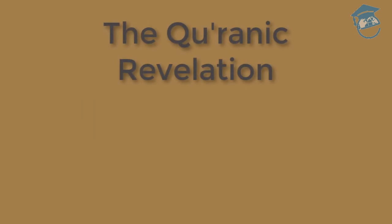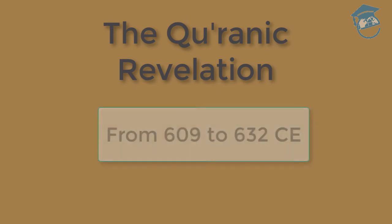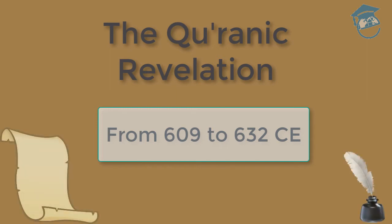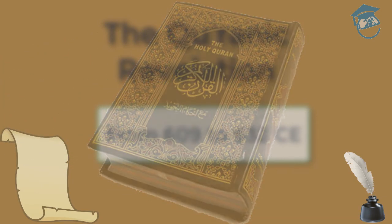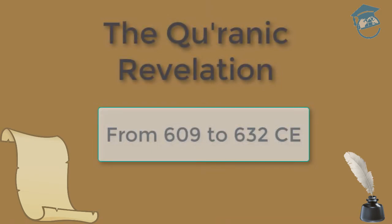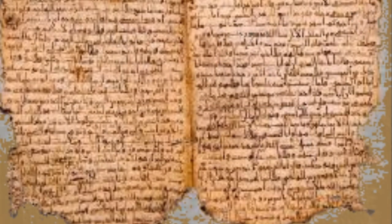The Quranic Revelation. The revelation of the Quran to the Prophet Muhammad began in the early 7th century. It continued for 23 years, between 609 until 632 of the Common Era, and it began to spread rapidly. The verses of the Quran were memorized as they were revealed. The Prophet Muhammad himself was illiterate — he could neither read nor write. He dictated the verses orally and instructed his companions to write them down on whatever they could find: paper, cloth, leather, or even bone fragments.